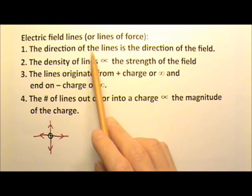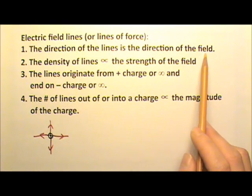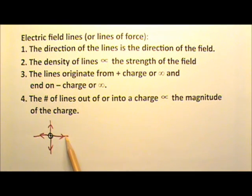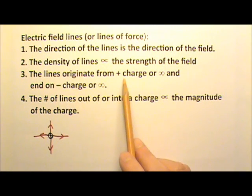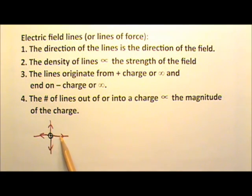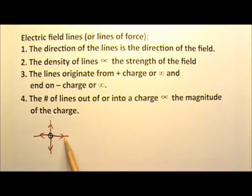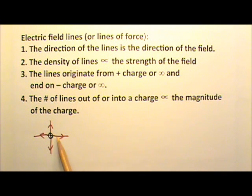The direction of the lines is the direction of the field. The line over here goes to the right, which means the direction of the electric field is to the right. The lines originate from a positive charge — that's why the lines go out of the positive charge. There are no negative charges nearby for the lines to end on, so these lines go to infinity.